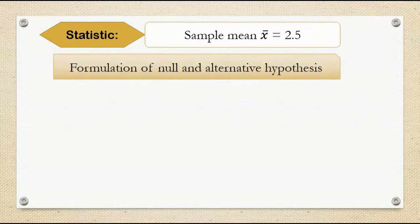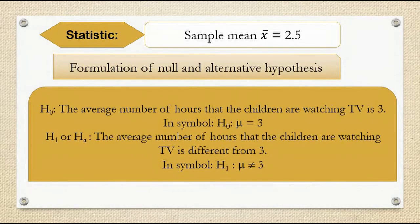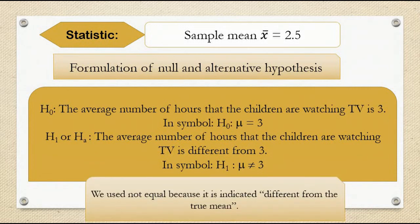Formulation of null and alternative hypothesis. Ho: the average number of hours that the children are watching TV is 3. In symbol, Ho: mu is equal to 3. H1, or HA, the alternative hypothesis: the average number of hours that the children are watching TV is different from 3. In symbol, H1: mu is not equal to 3. We used not equal because it is indicated as different from the true mean.